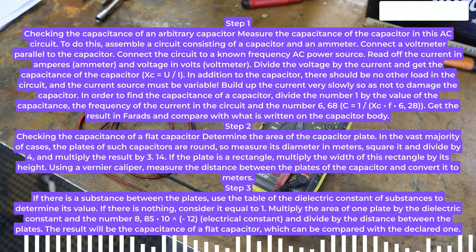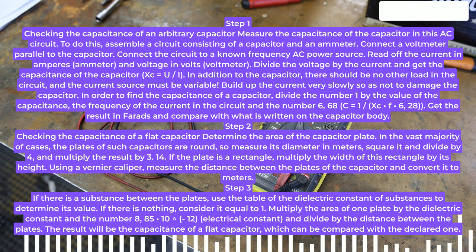Read off the current in amperes from the ammeter and voltage in volts from the voltmeter. Divide the voltage by the current and get the capacitance of the capacitor, XC equals U slash I.